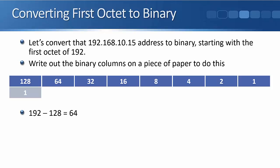Then we see what we've got left. 192 minus 128 is 64, so we've got 64 left. We then go to the next column and see, does 64 go into 64? Yes it does, so we put another 1 in there. We then take the 64 away and we're left with 0.